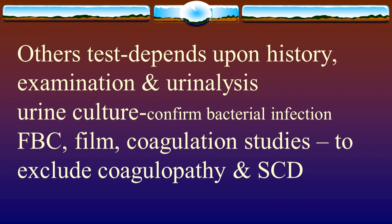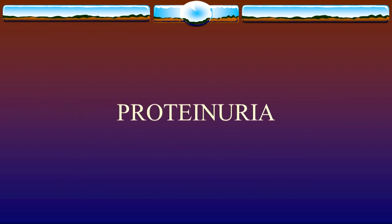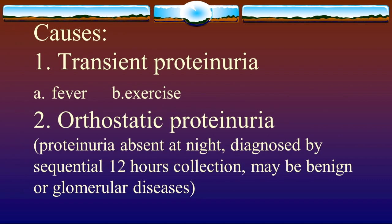Investigations include urinary dipstick — positive for myoglobin or free hemoglobin — and urinary microscopy to confirm red blood cells and casts. Also perform ASO titre, throat swab or culture and sensitivity, and serum complement levels.